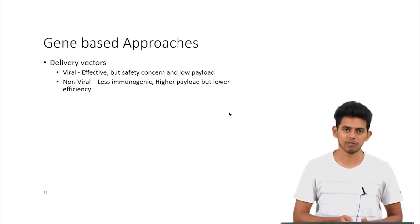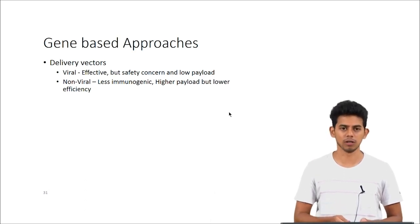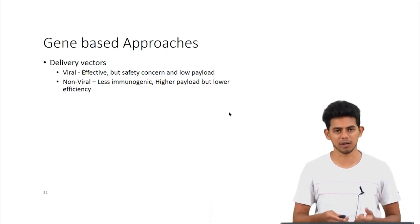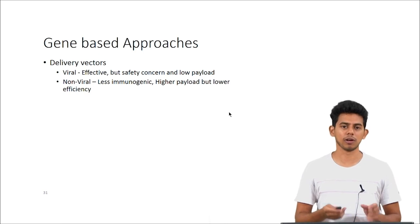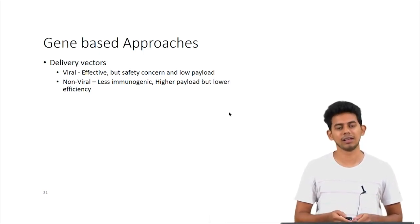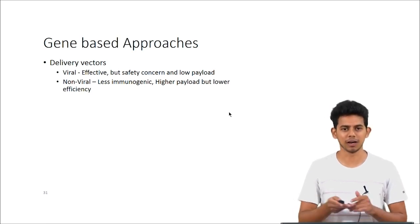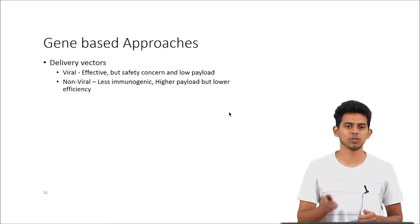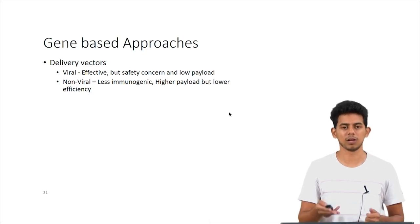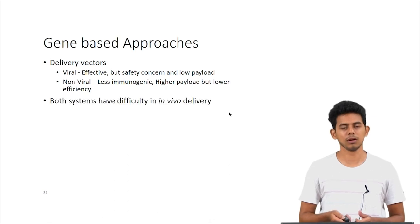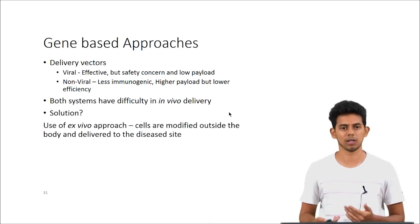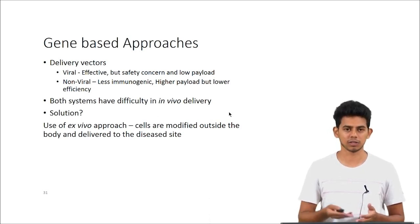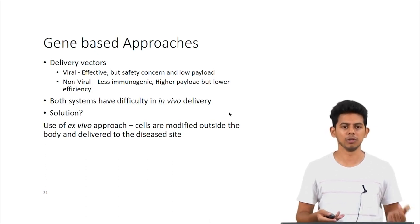The delivery vectors used for nucleic acids are viral or non-viral. Viral vectors have a very high efficiency of gene delivery, but safety is a concern and payload is low — although the virulent part of viral nanoparticles is deleted out, it can always mutate back into being virulent. Non-viral vectors are less immunogenic and much safer, with higher payload, but their efficiency is quite low. Both have difficulty in in vivo delivery. The solution is to take cells out into an ex vivo environment, transfect them with the gene of interest, and then reintroduce them into the body.